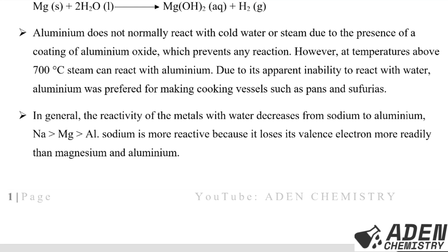Aluminium does not normally react with cool water or steam due to the presence of a coating of aluminium oxide, which prevents any reaction. However, at temperatures above 700°C, steam can react with aluminium. Due to this inability to react with water, aluminium was preferred for making cooking vessels such as pots and saucepans. In general, the reactivity of the metals with water decreases from sodium to aluminium. Sodium is more reactive because it loses its valence electrons more readily than magnesium and aluminium.